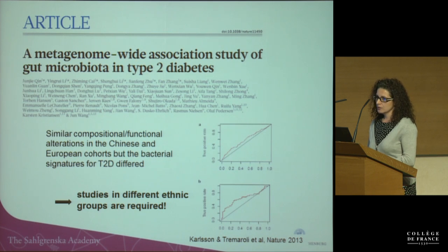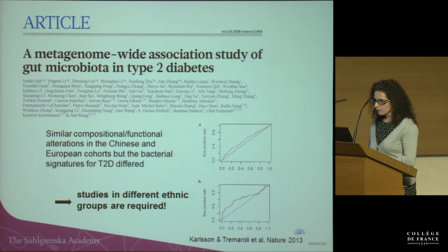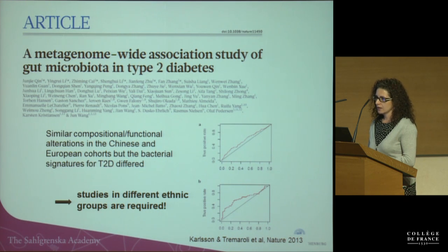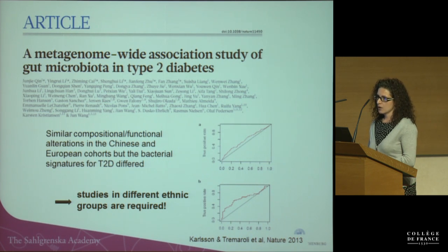This means that microbial signatures are different between ethnic groups and we need more multi-ethnic studies. We are recruiting subjects at the University of San Francisco — Hispanic, Caucasian, and Chinese populations — as well as in the Netherlands and Mexico, for about 6,000 to 8,000 subjects.